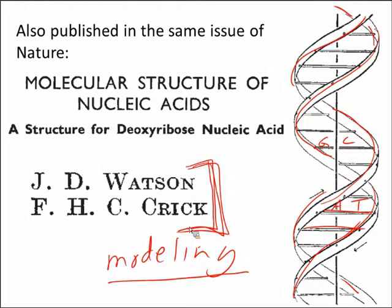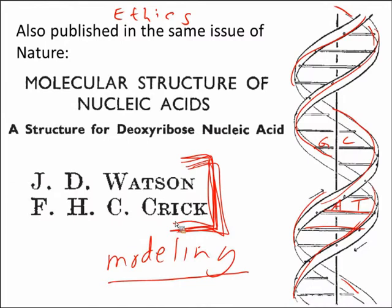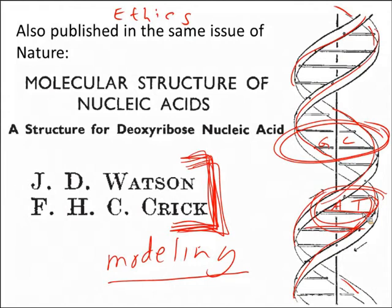They used Rosalind Franklin's crystal structure of DNA without her permission. What I'm doing today is an ethics lecture — we'll spend about ten minutes on ethics. Most people think the double helical nature came from Watson and Crick, but in reality, the double helix came from Rosalind Franklin's crystal structure. The A-T and G-C base pairing did come from Watson and Crick, though it probably would have been obvious had Franklin published first.